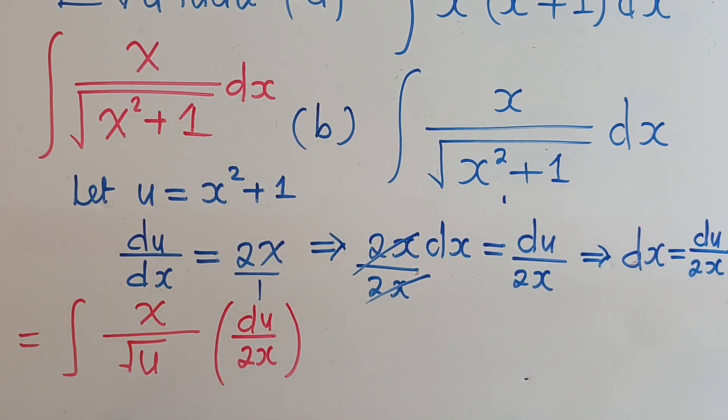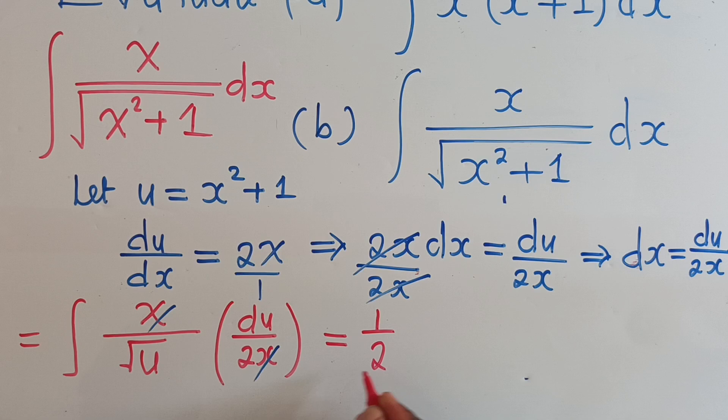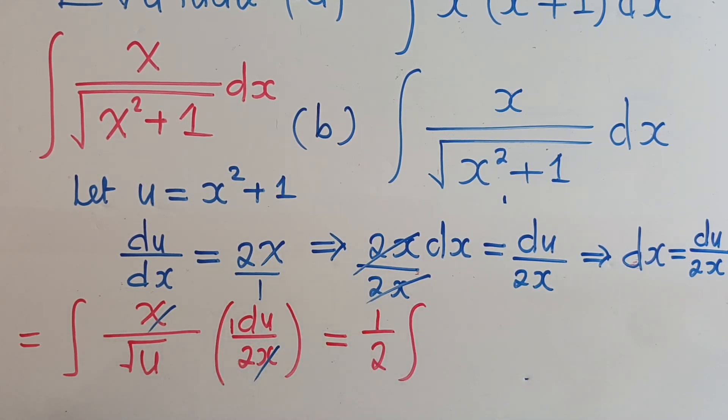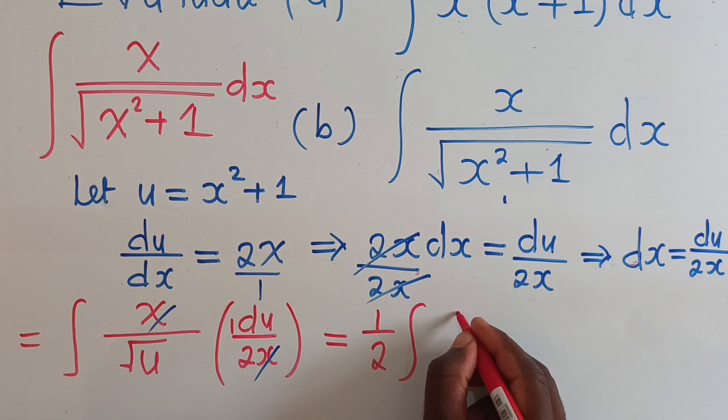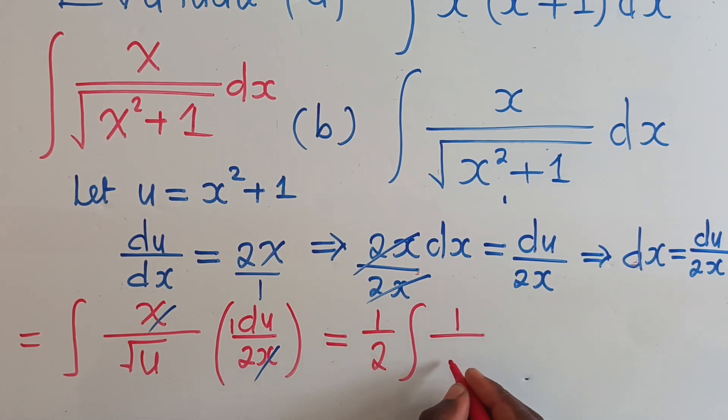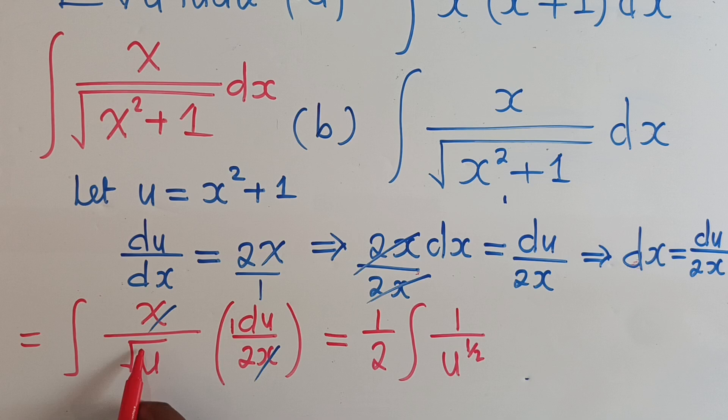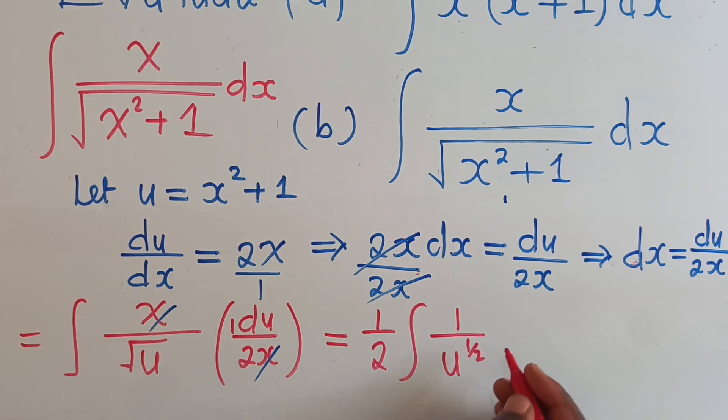From here we know that this and this will cancel out. They are common. We're going to remain with the one over two in front of the integral, and then here we have one over u power one-half. In case you don't know, square root is equal to power one-half.